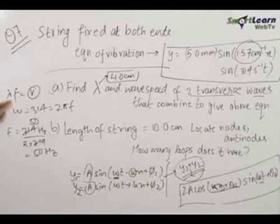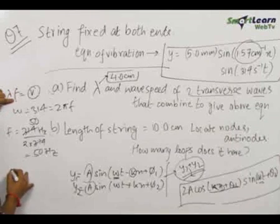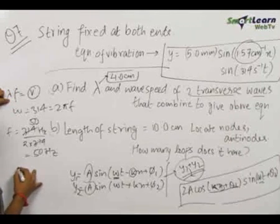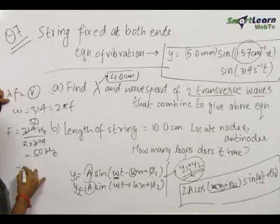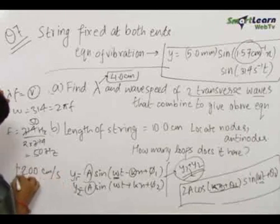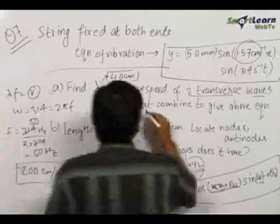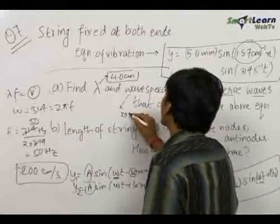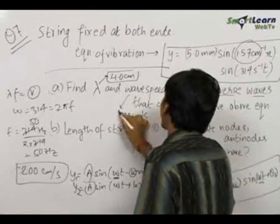So, the value of f comes out to be 50 hertz. The value of λ was 4 centimeters. Therefore, the wave speed comes out to be equal to 200 centimeters per second.